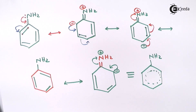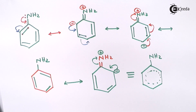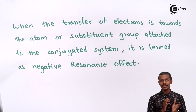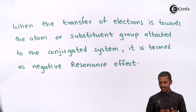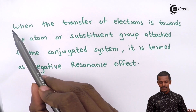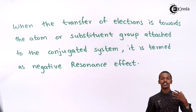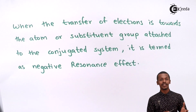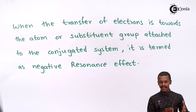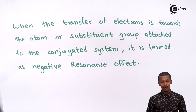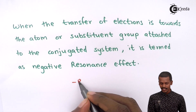Now let us move on to the next topic: Minus R effect. When the transfer of electrons is towards the atom or substituent group attached to the conjugated system, it is termed as negative resonance effect, or we could call it as Minus R effect.